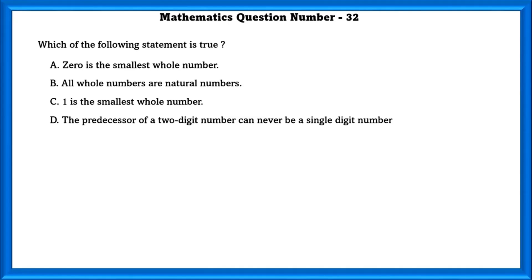Mathematics question number 32. Which of the following statement is true? 0 is the smallest whole number. Yes, natural numbers begin from 1 while whole numbers begin from 0.